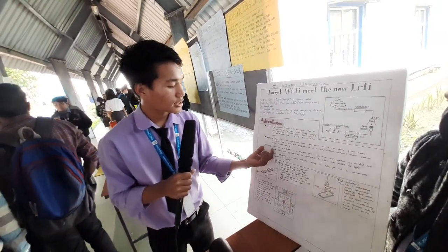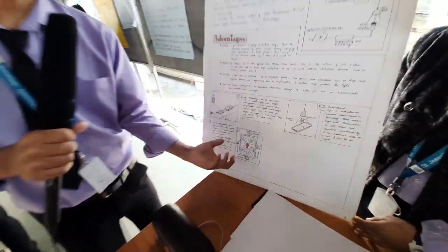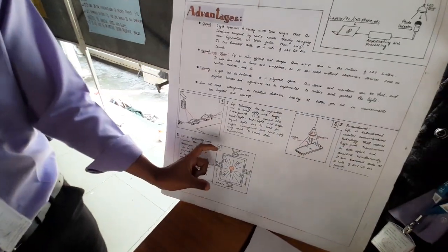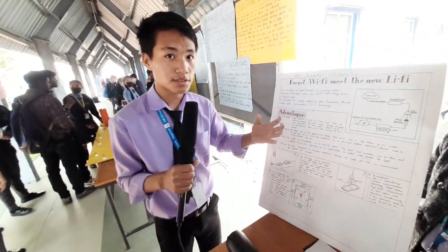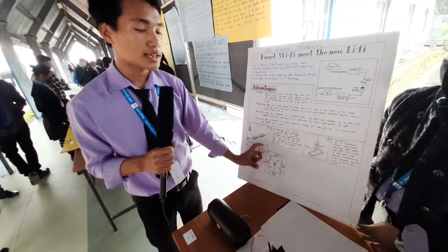It is secure, which means the light that we are using in one room, the next room cannot use. So it acts as a security. At the same time, it is a disadvantage because our friends might want to share the internet connection in the next room, but due to the wall we cannot share. That acts as a security as well as a disadvantage.